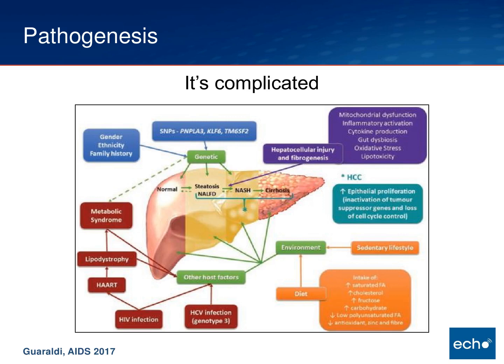Putting that all together, it is quite complicated. It can start with the environment — people who eat a lot of saturated fats, fructose, and carbohydrates with a sedentary lifestyle, feeding into obesity, which leads to fatty liver. Hepatitis C especially genotype 3, and HIV infection working through antiretroviral therapy, lipodystrophy, and the development of metabolic syndrome are also host factors leading to fatty liver disease. Genetic predispositions and mitochondrial dysfunction — particularly through HIV-related medications — are additional factors, leading from a normal liver through steatosis, to NASH, and then cirrhosis.